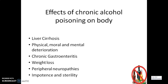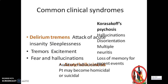Coming to the effects of chronic alcohol poisoning: cirrhosis, physical, moral, and mental deterioration, chronic gastroenteritis, weight loss, peripheral neuropathies, impotence, and sterility can be observed. A common clinical syndrome is delirium, which can be observed during an acute attack. Tremors, excitement, fear, hallucinations, and even auditory hallucinations can be observed. The patient may become homicidal, and suicidal tendencies can also be observed.